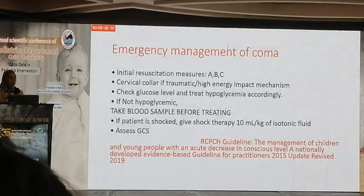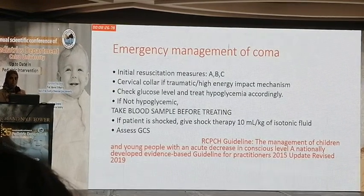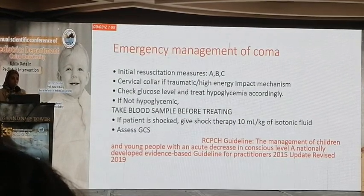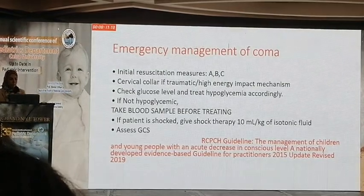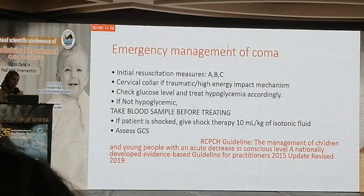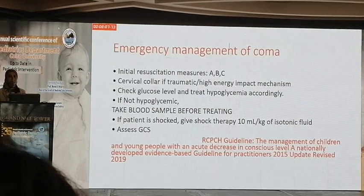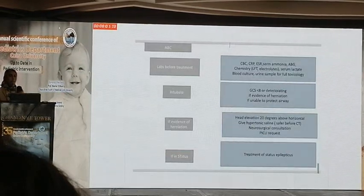Emergency management of coma starts with initial resuscitation measures — ABC. Use a cervical collar if there is a history of head trauma. Check blood glucose level and treat hypoglycemia if present. If the patient is not hypoglycemic, take blood samples before treating with IV fluids. If the patient is in shock, give shock therapy with about 10 ml/kg of isotonic saline and reassess the Glasgow Coma Score.